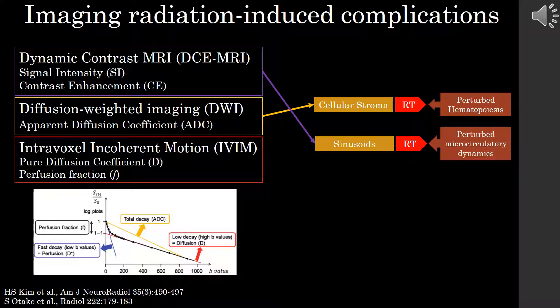Intravoxel incoherent motion was previously proposed to acquire diffusion and perfusion-related effects in a single acquisition sequence. The method comes from the observation that, at low B values, the diffusion decay curve does not follow a linear decay, as is the assumption in calculating ADC. The resulting biexponential model was thought to be a result of perfusion-related effects only observable at these low B values, and become negligible at higher B values.